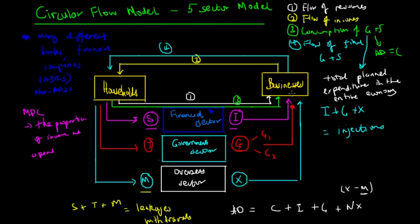To summarise, we started with households and businesses in the two-sector flow model. We have now added three more sectors: the financial sector, the government sector, and the overseas sector. Not all incomes are injected back into the economy — we have leakages in the form of savings, taxation, and imports — and injections in the form of investment spending by businesses, government current and capital spending, and exports of goods and services to other countries.